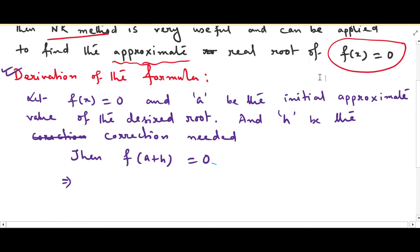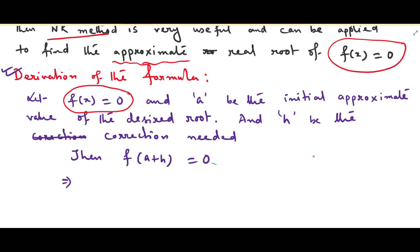Now to derive the formula, we need to find the real root of f(x) = 0. As you remember from bisection method, we find two numbers c and d where at c we have a negative value and at d a positive value, so the root lies between c and d. We suppose x1 is the actual root, so f(x1) = 0.